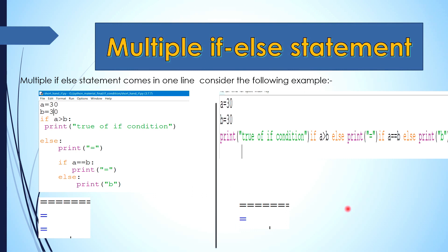Here we are going to compare a simple multiple if-else statement and the shorthand multiple if-else statement. You can see a is equals to 30 — 30 is the value stored in variable a — and b is another variable which stores 30. The condition is: if a is greater than b, print true. If this condition is true, it will print true; else, print equal.